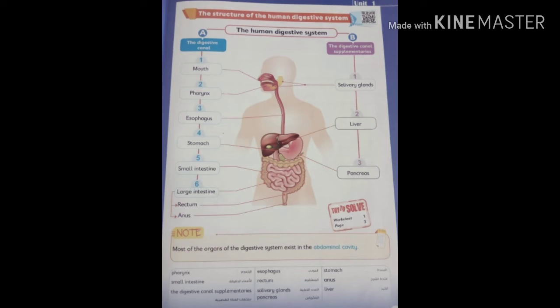The six organs of the digestive canal are: number one, mouth; number two, esophagus; number three, stomach; number four, small intestine; number five, large intestine.